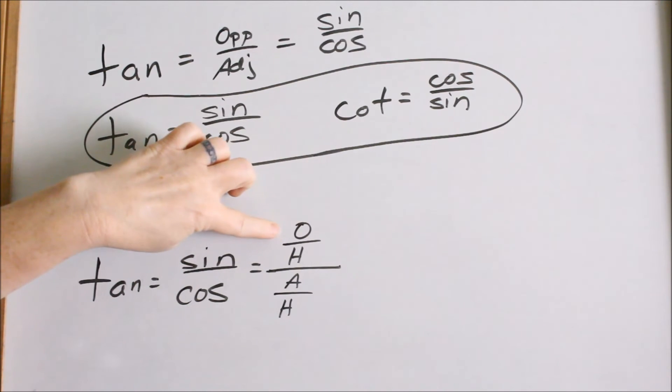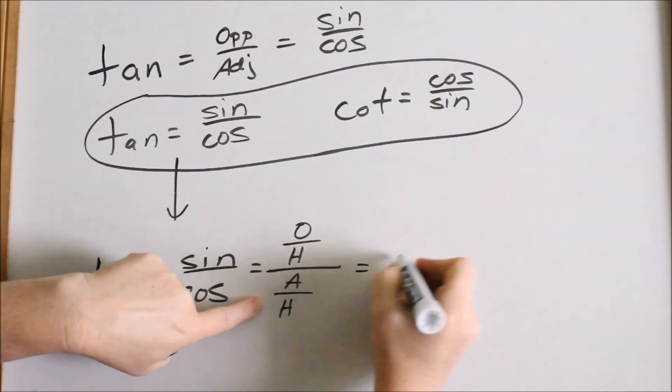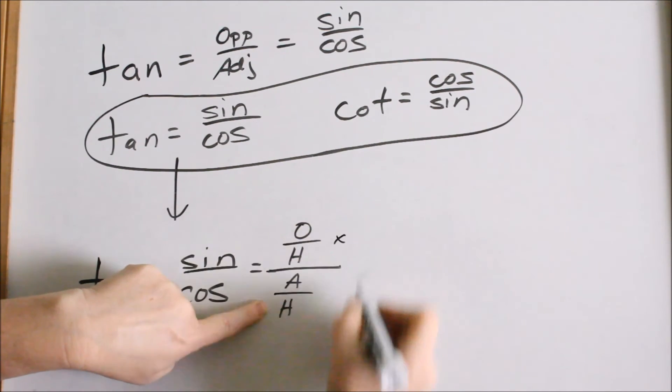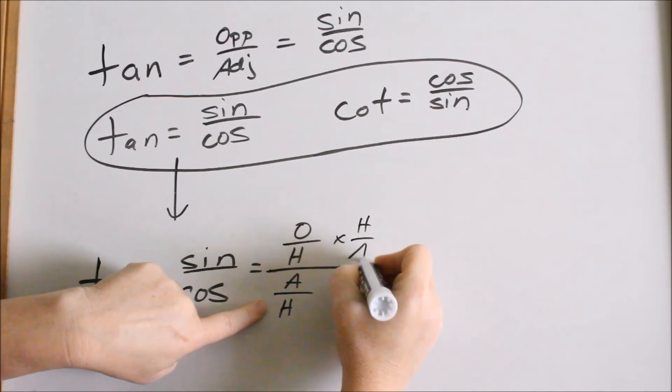So here we have a fraction divided by a fraction. What do you do when you divide fractions? You flip the second one and multiply. So we're going to flip and multiply.